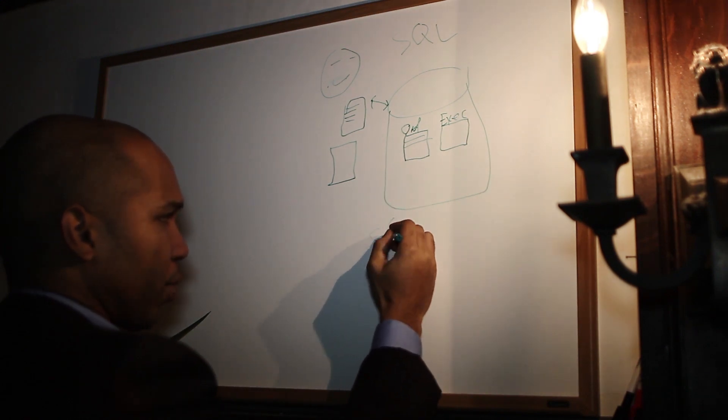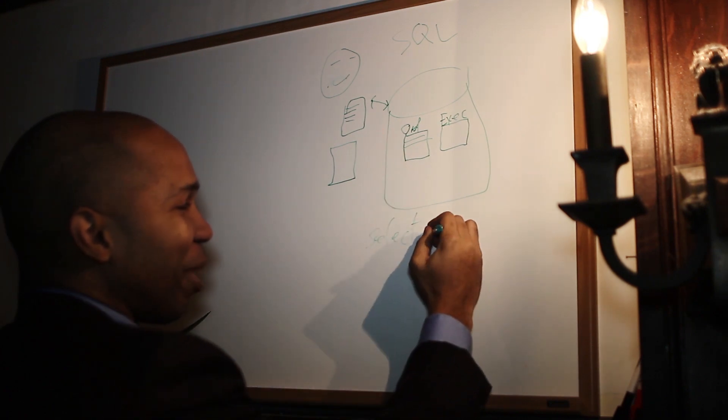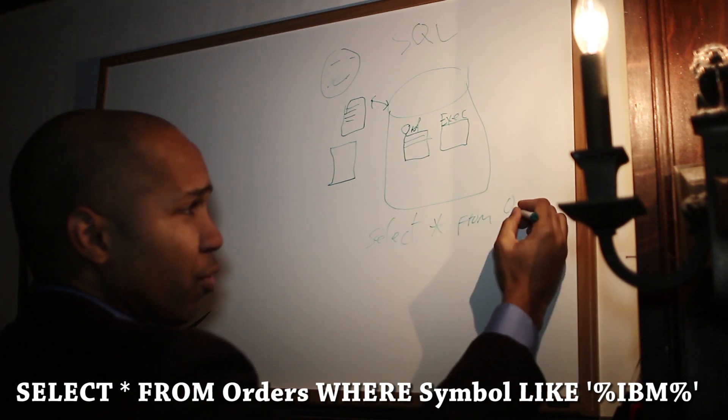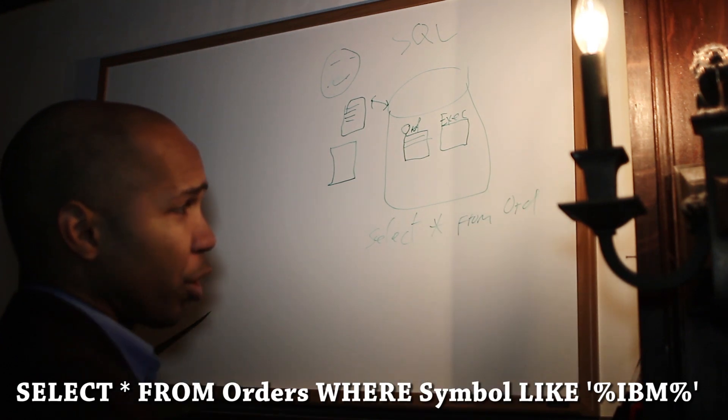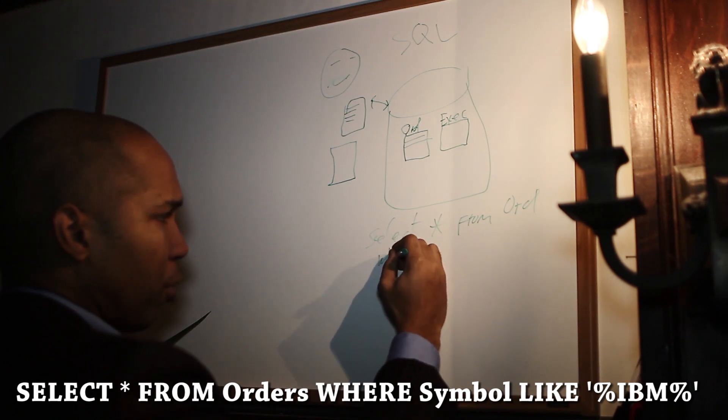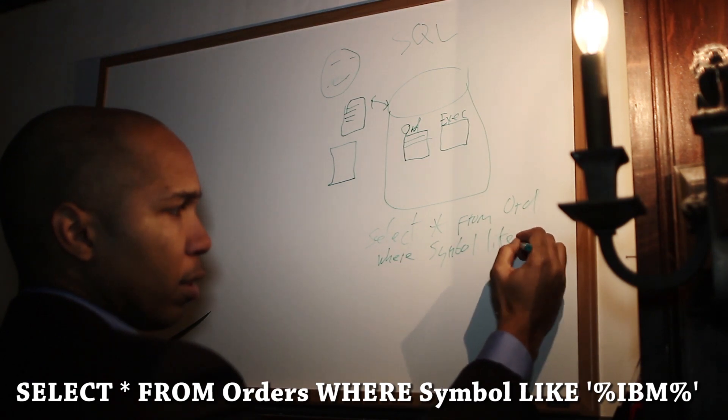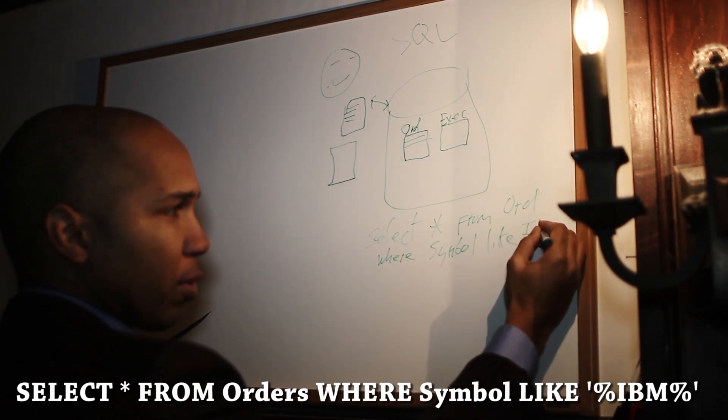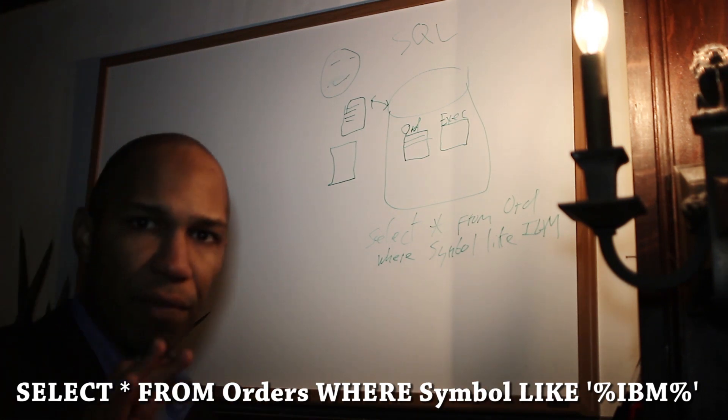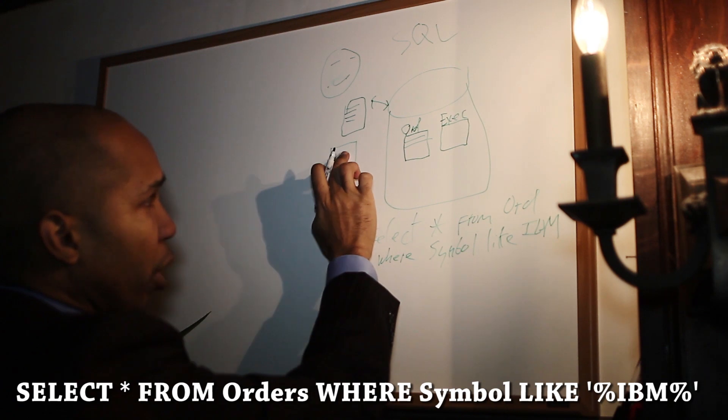So I can say select, hopefully you can see my horrible writing. I apologize if you cannot. Select this, listen to me if you can't see this. Select star from orders, and then we give a condition. So we can say select star from orders where symbol like IBM. Now this syntax is not exactly correct here, but just to give you the idea,